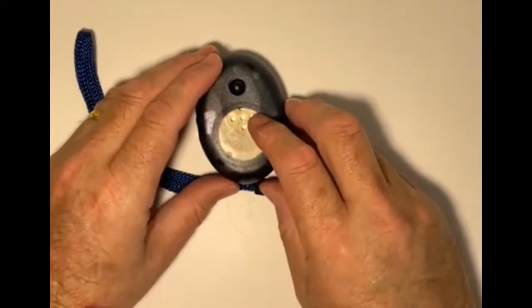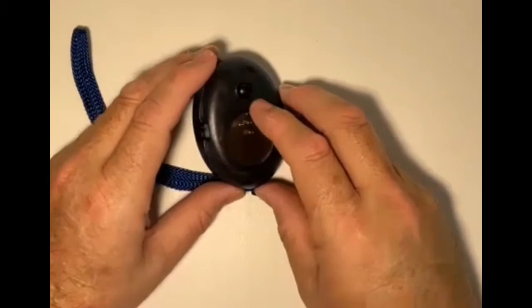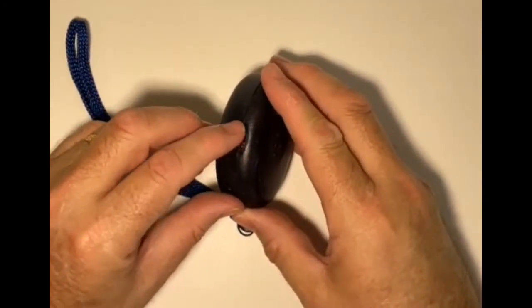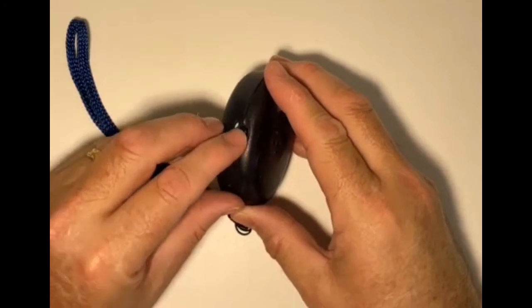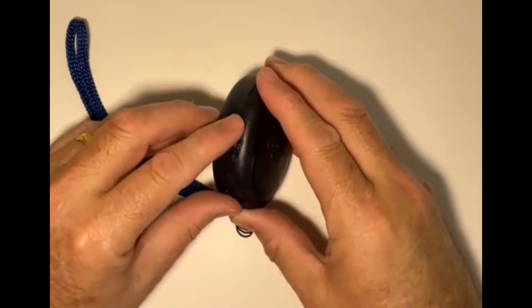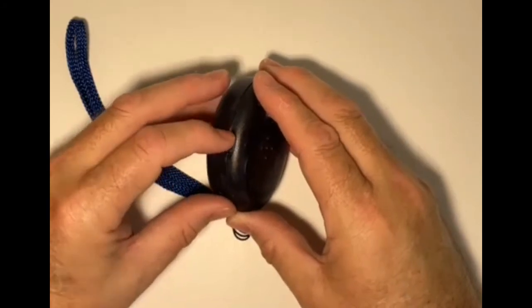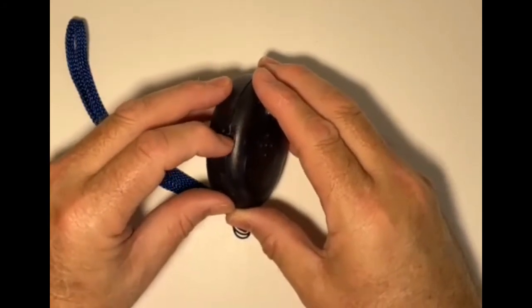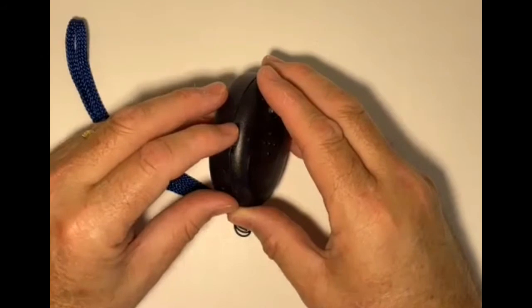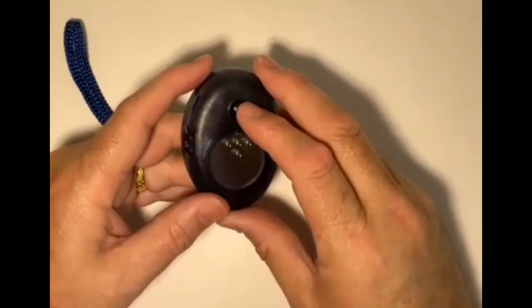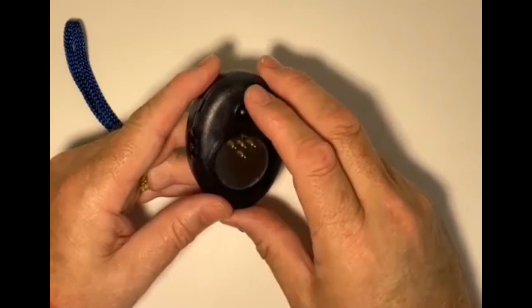The way this compass works is on the side here we've got a slide button. If I push it away from me to the furthest position, that's the English setting. If I push it back towards me to the middle setting, that means it's currently off. If I try and press the top button, nothing's going to happen.